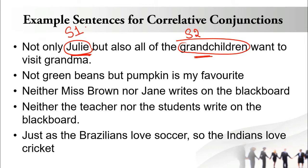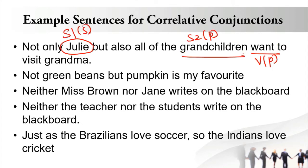Julie is singular; grandchildren is plural. The verb in the sentence is 'want.' Want is singular or plural? Plural — because there is no 's.' The moment you add 's' to want, it becomes 'wants,' which is the singular form. So we have two subjects — one singular, one plural — and one verb which is plural. The biggest question is: should I decide the verb based on subject one or subject two?